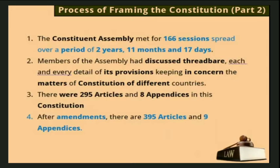Regarding the content of the Constitution, you should remember: when the Constitution was first formed, it had 295 articles and 8 appendices. After amendments — and amendment means change — based on people's aspirations and expectations, some rules were changed. So when the Constitution was originally formed, there were 295 articles and 8 appendices.